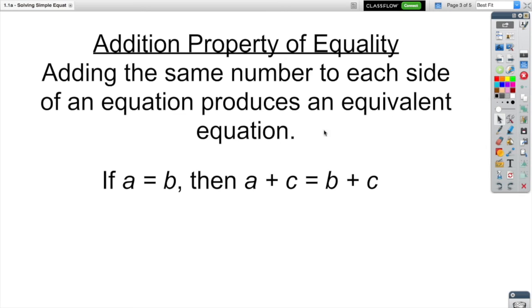And what the property of equality says is that adding the same number to each side of the equation produces an equivalent equation, meaning that if I just choose to add C number of blocks to one side and C number of blocks to the other, it's still balanced and it still represents the equivalent equation to the original.